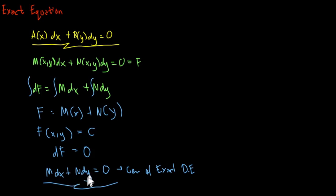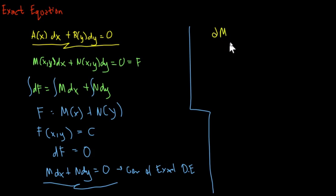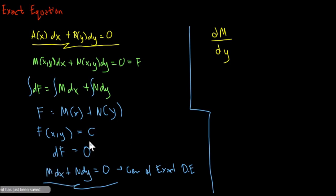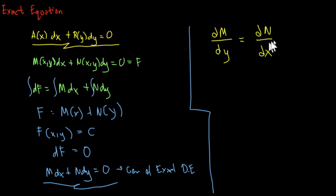Going back to our equation, if we are going to get the partial derivative of M with respect to y — because M is in terms of x and y — we get the partial derivative of M in terms of y. This will be equal to the partial derivative of N in terms of x. If this condition is met, therefore our given differential equation is exact.